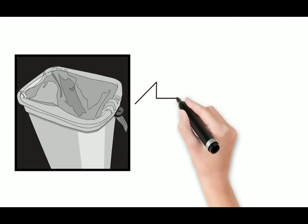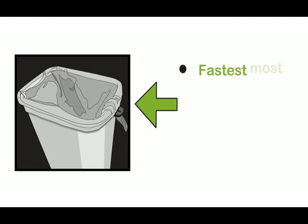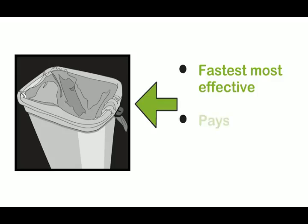The patented trash bag cinch is simply the fastest, most effective way to keep trash liners in place. The cinch pays for itself very quickly in labor savings alone, and it's so easy to use.